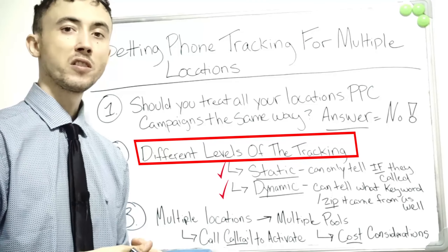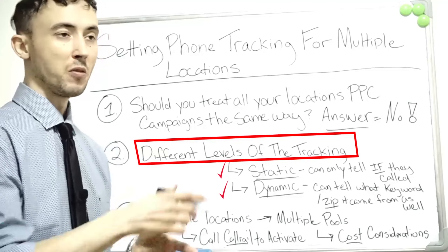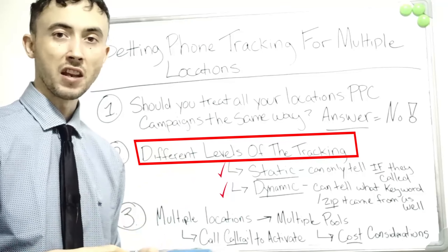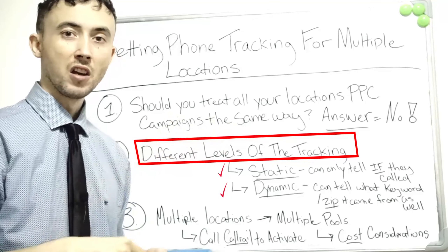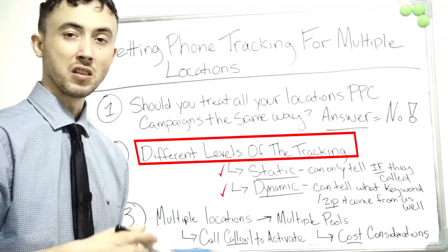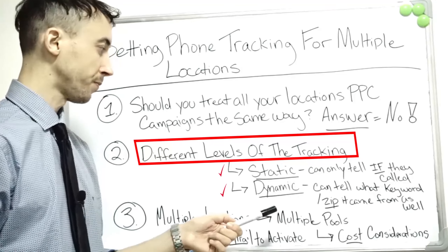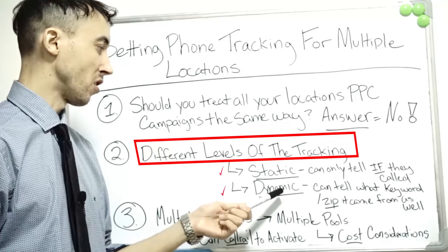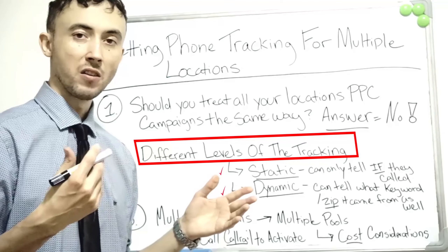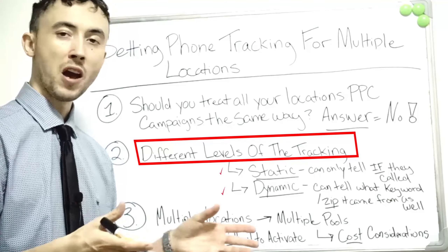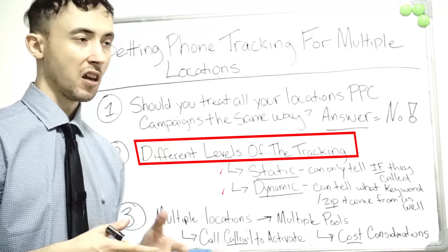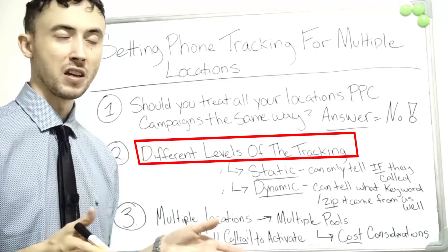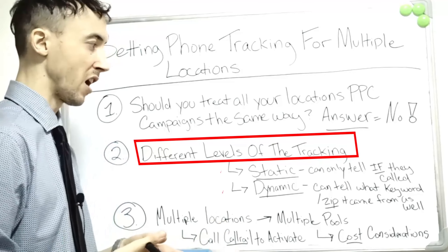With static tracking, the system can only figure out that somebody called. Within their system, if you have UTM tags on your URL, it will show where the call came from on some systems. But for the most part, you should use dynamic for everything based on my opinion, because for the cost of it, there's no real way you're not going to get the return out of it — you're losing so much by not using it.